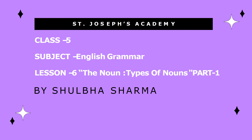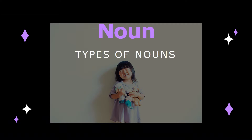Hi, my dear students. I am Shulbha Sharma from St. Joseph's Academy. Today we are going to learn nouns and the types of nouns in English grammar, Grade 5. The first and foremost thing that we learn in English grammar is noun. It is one of the fundamentals of English grammar. Today we are going to learn more about it as well as the types of nouns. We will see what exactly is called a noun and how do we identify the different types of nouns.